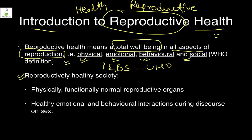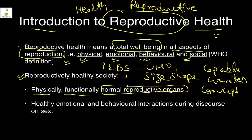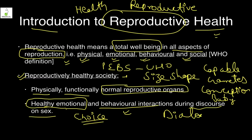A reproductively healthy society is one which has physically and functionally normal reproductive organs. Physical means normal size, shape, and anatomy. Functional means they are capable of producing gametes, gametes can fuse, conception can happen, and a healthy baby can be delivered. There should also be healthy emotional and behavioral interactions, where people feel safe and have a choice regarding their sexual choices.